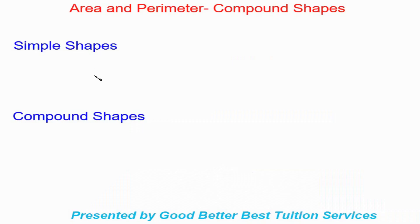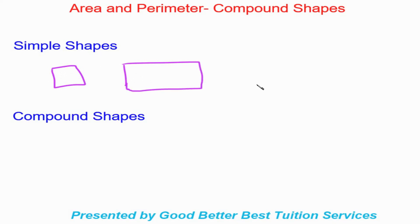Good day and thank you for joining us. In our last lesson we went over area and perimeter of simple shapes. In today's lesson we'll be taking it to the next step and doing area and perimeter for compound shapes. In our simple shapes we have our square, rectangle, circle, and triangle. Compound shapes are shapes where two simple shapes are combined together — that's where the 'compound' part comes from.